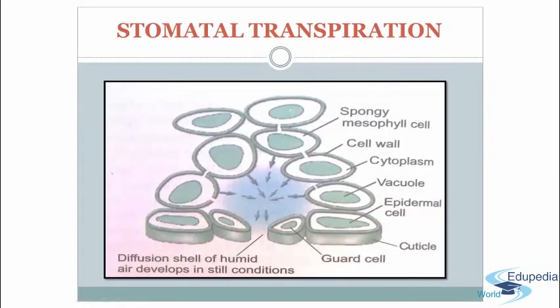As you can see in the image, in still air a hemisphere of humid air diffuses out of each stomata. When there are air movements, the diffusion shell is blown away and replaced by drier air, which maintains the water potential gradient and increases the rate of transpiration. You can see the spongy mesophyll cells, the cell wall, the cytoplasm, the vacuole, the epidermal cell, the cuticle, the guard cell, and the diffusion shell of humid air that develops in still conditions.